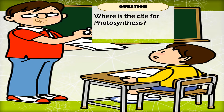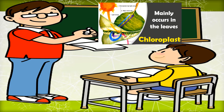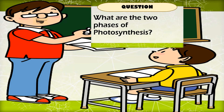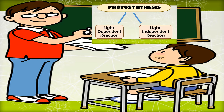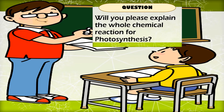Very good, Marco! Now, what is the site for photosynthesis? Photosynthesis mainly occurs in the leaves, in a specific part called chloroplast. Very good, Marco! Now, what are the two phases of photosynthesis? The two phases of photosynthesis are the light-dependent reaction and the light-independent reaction. Very good, Marco! Now, will you please explain the whole chemical reaction for photosynthesis?